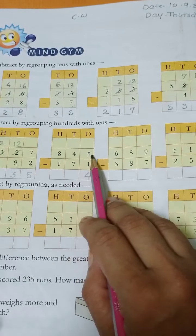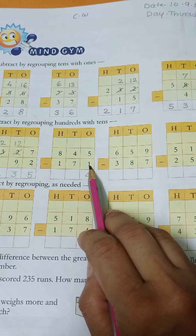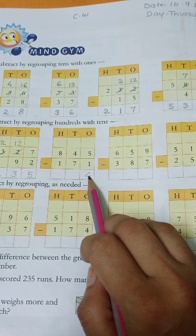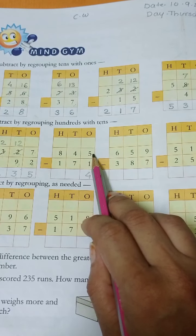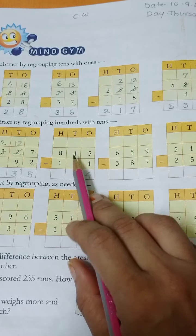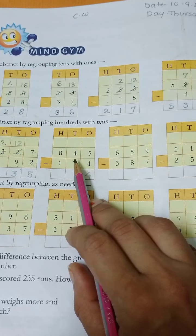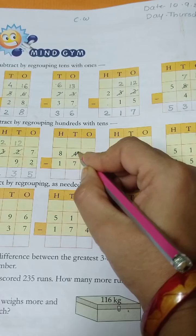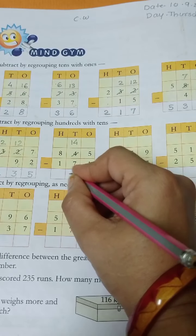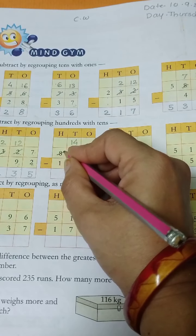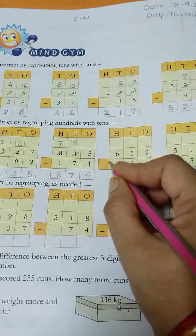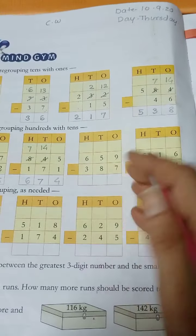Then next number, 845 minus 171. 5 minus 1, easily 4, because upper side greater number and lower side smaller number. Next, 4 minus 7, is it possible? No. Cut this number, 10 plus 4 is 14. 14 minus 7 is 7. Then 8 minus 1 is 7. Then 7 minus 1 is 6. Is that clear? Check your answer.